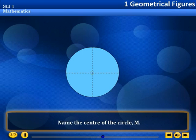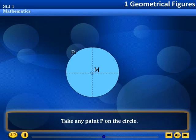Name the center of the circle M. Take any point P on the circle. Draw the line MP with your ruler. MP is a radius of the circle.